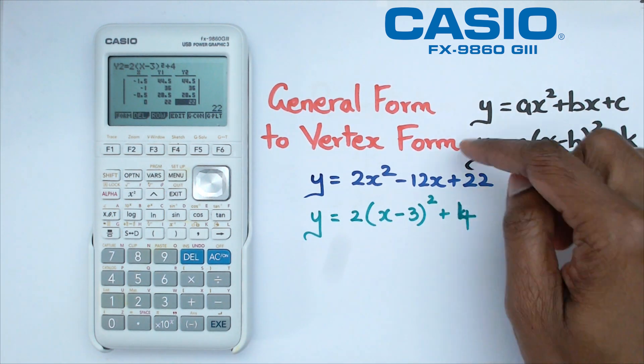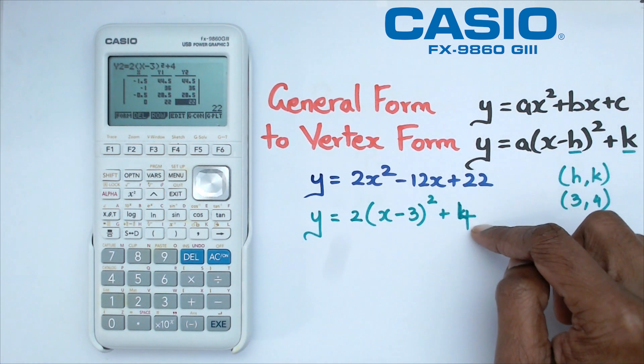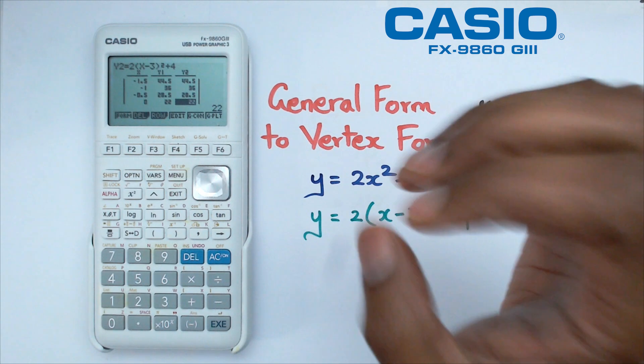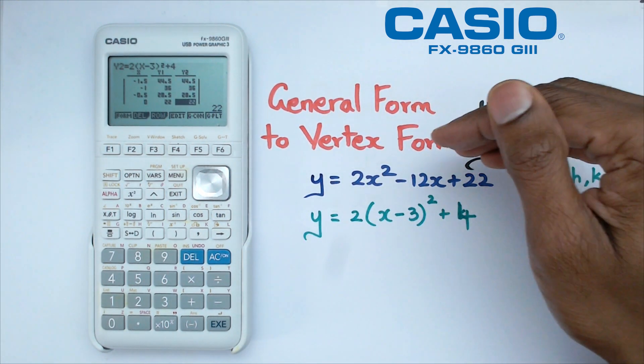So what we've really done is gone from general to vertex form just using the conics part of this particular calculator. Alright folks, that is pretty much how you go from general form to vertex form for a parabola on this Casio graphics calculator.